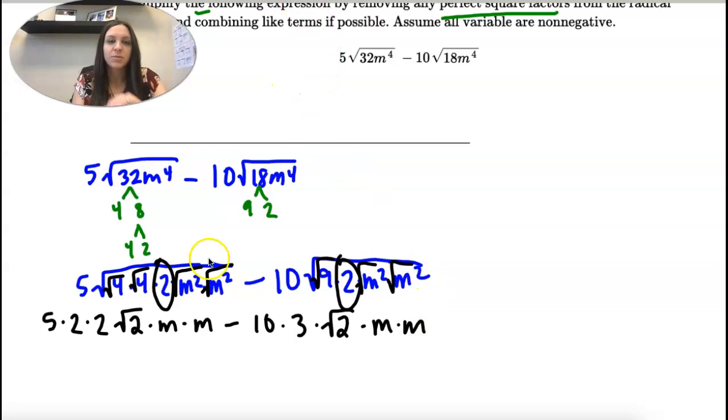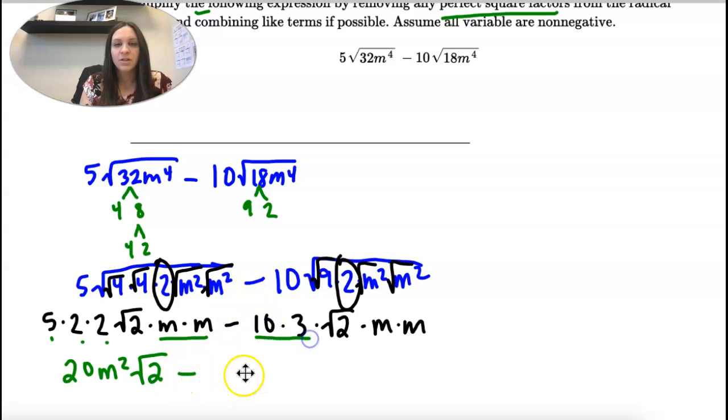So, let's combine some terms here. I have 5 times 2 times 2. 20. And then I have 2 m's. That's m squared. And then I still have a square root of 2. Minus 10 times 3 is 30. m times m is m squared. And I still have a square root of 2.